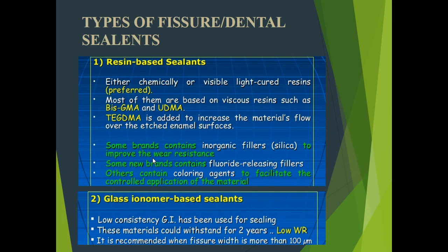Different types of pit and fissure sealants are available in dentistry. Resin-based sealants are either cured chemically or through visible light, which is usually LED light. Most of them are based on viscous resins such as Bis-GMA and UDMA; TEGDMA is added to increase the material's flow over the etched enamel surfaces. Some brands contain inorganic fillers like silica to improve wear resistance. Some new brands contain fluoride-releasing fillers.